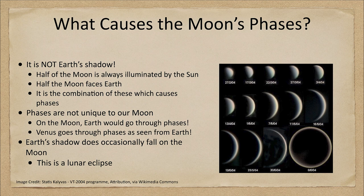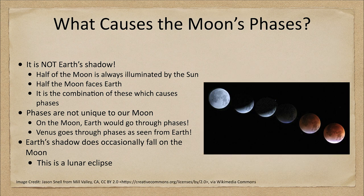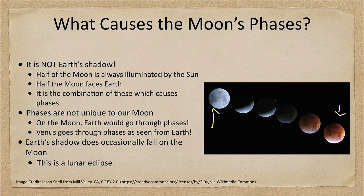Now it is true that Earth's shadow does occasionally fall on the moon. This is what we call a lunar eclipse. Here we see the uneclipsed moon off to one side, and we see the moon much closer into Earth's shadow — so Earth's shadow is falling on the moon. But that is only in those very special cases when the Earth, Moon, and Sun are exactly lined up, which gives us a lunar eclipse.